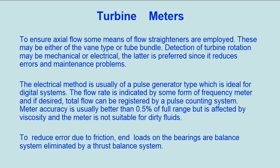To ensure axial flow, some means of flow straighteners are employed. These may be either of the vane type or tube bundle. Detection of turbine rotation may be mechanical or electrical, the latter being preferred since it reduces errors and maintenance problems.